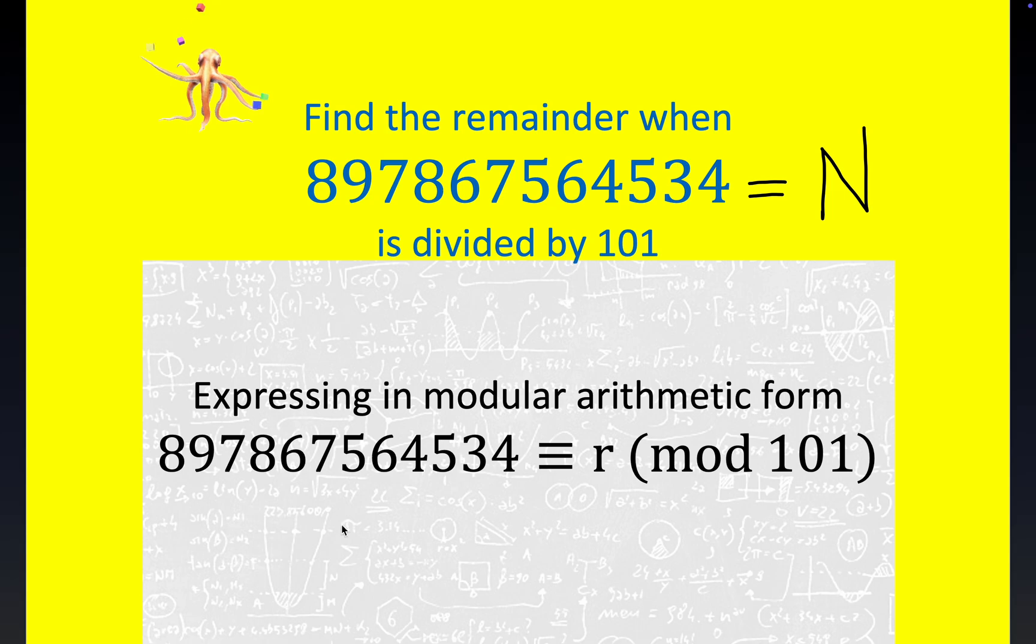The other way to write this is N equals 101Q, we'll let Q stand for the quotient, and then plus a remainder.